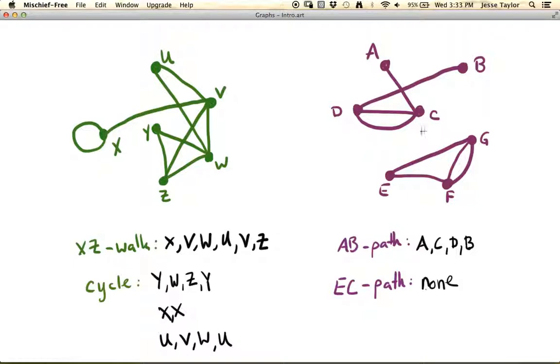So, by the way, in a disconnected graph, like the purple one over here, these individual pieces that are connected are called components. So this purple graph has two components versus the connected green graph on the left, which has a single component. So it's a connected graph.